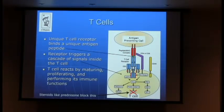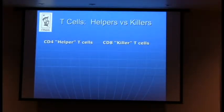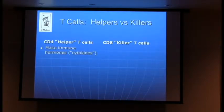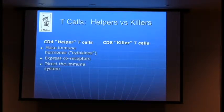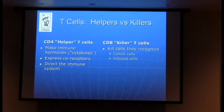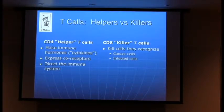T-cells are a broad category divided into major subgroups. The major division is between helper and killer T-cells — helpers are CD4, killers are CD8. The CD4s make immune hormones and direct the immune system like officers directing an army, telling it how to respond and which cells to bring in. The killer cells, as the name implies, will actually kill the cells they recognize — they're an important part of your ability to fight off cancers and cells infected with viruses.